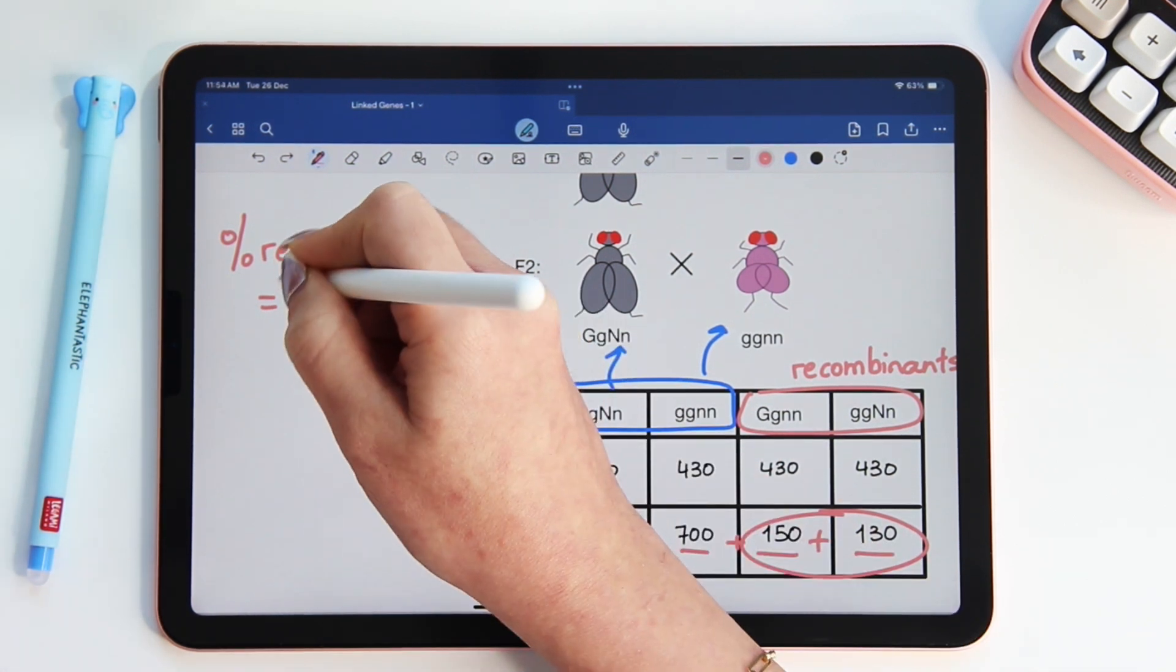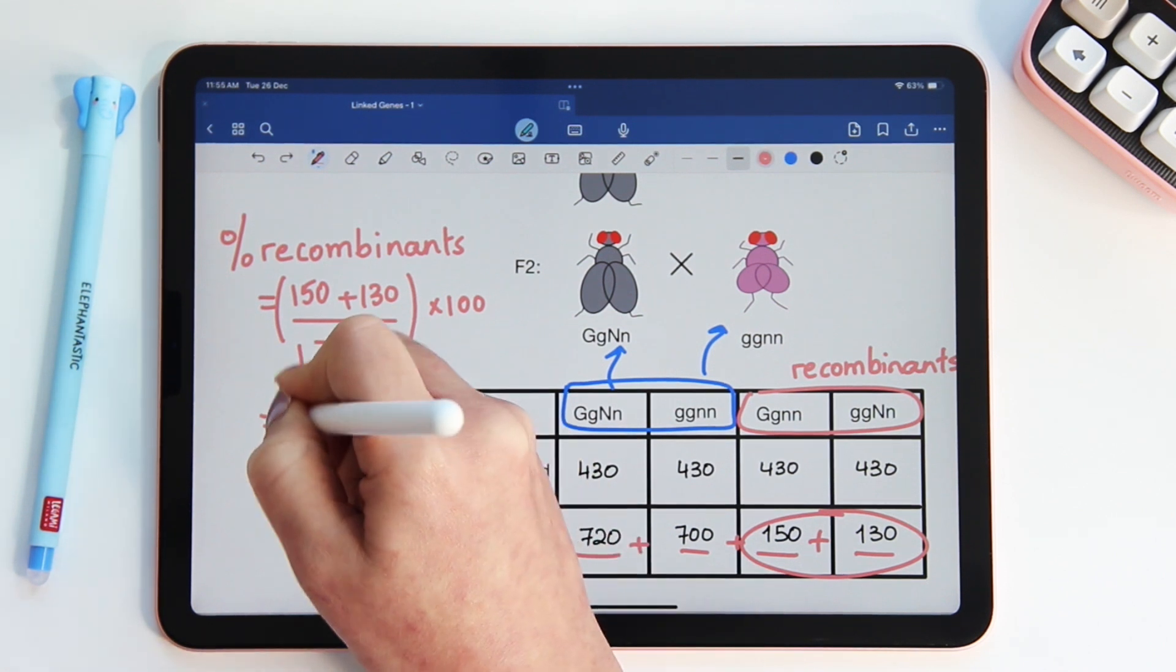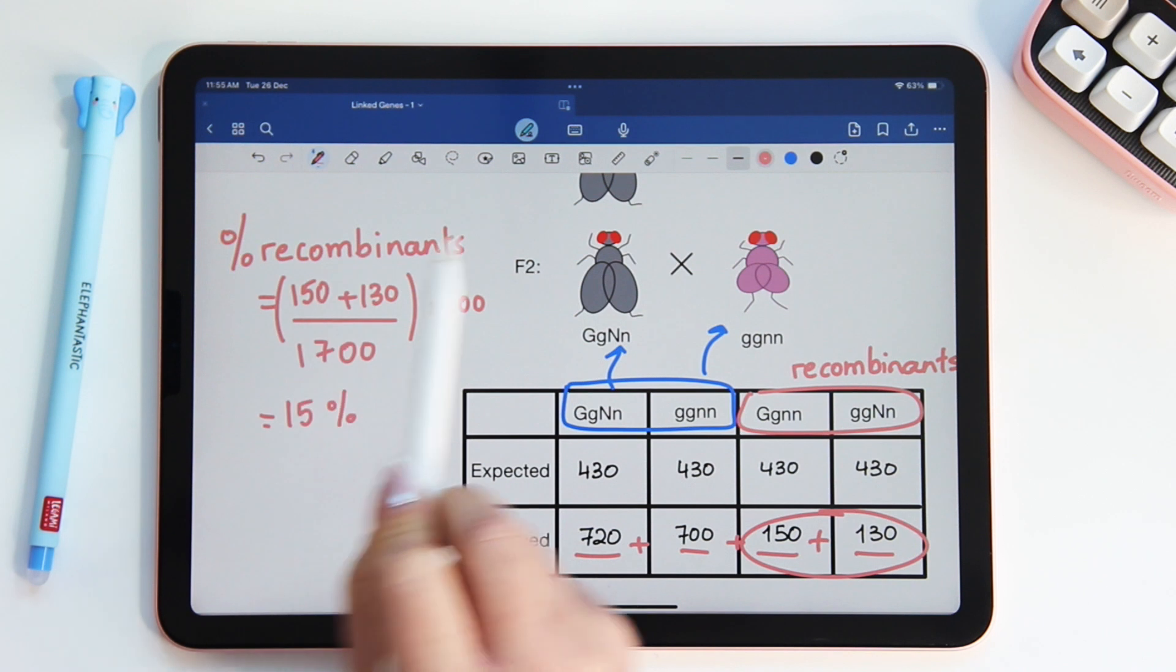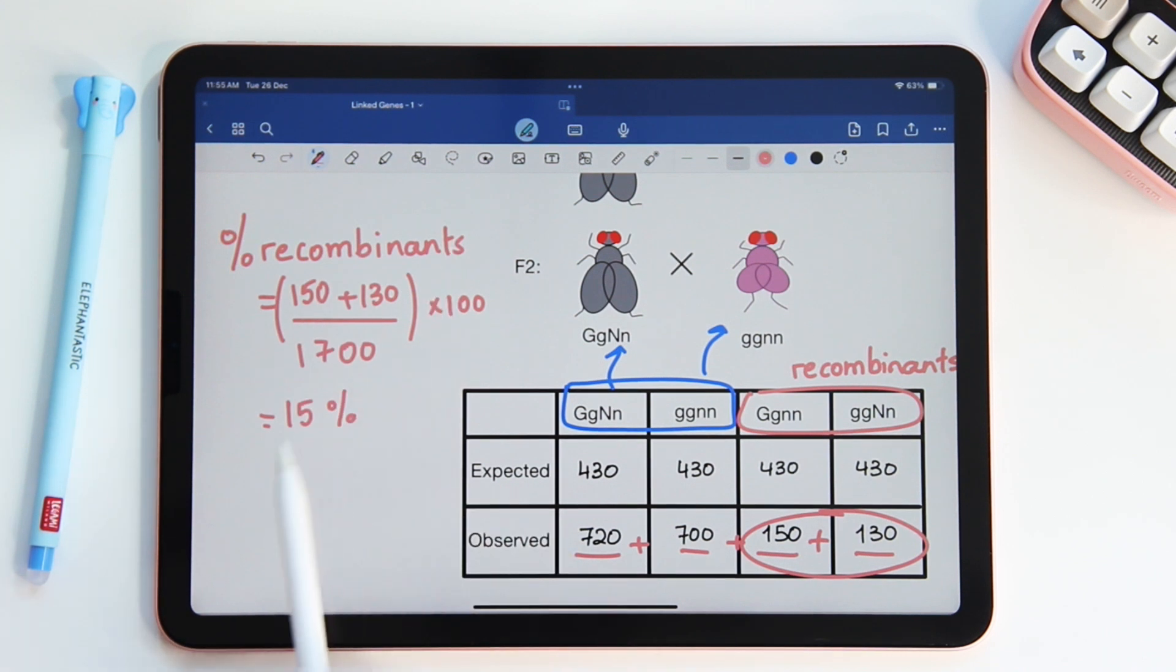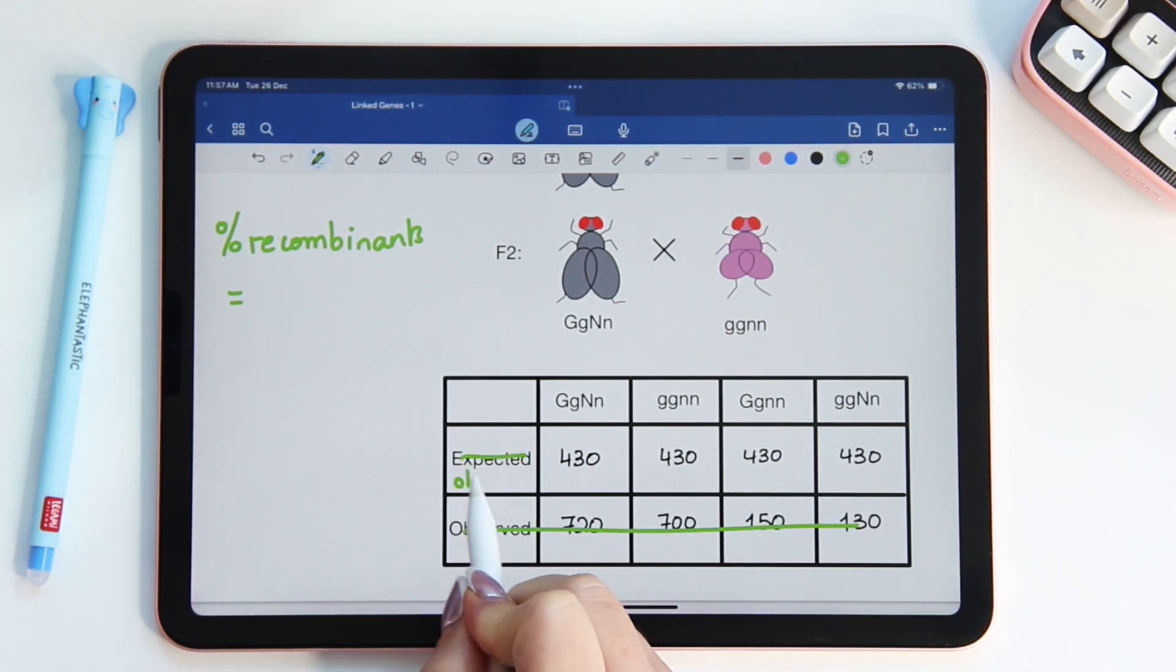And of course, because we are trying to find a percentage, we're going to multiply this whole thing by 100. And we get 15%. So our percent recombinants equals to 15%. Now, let's assume for a second that these were not our observed numbers. Let's assume that the observed numbers were the same as the expected.